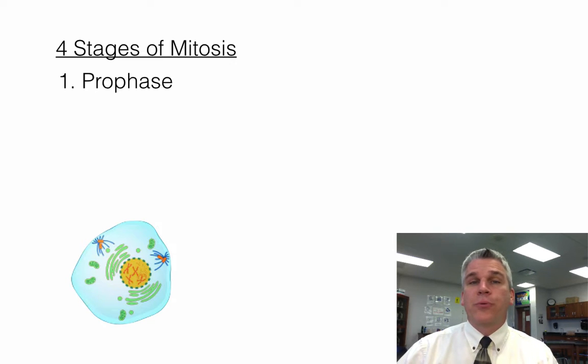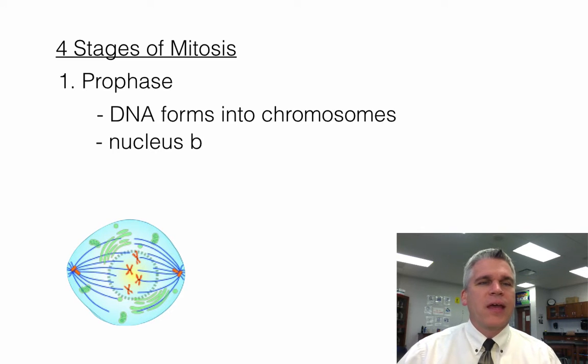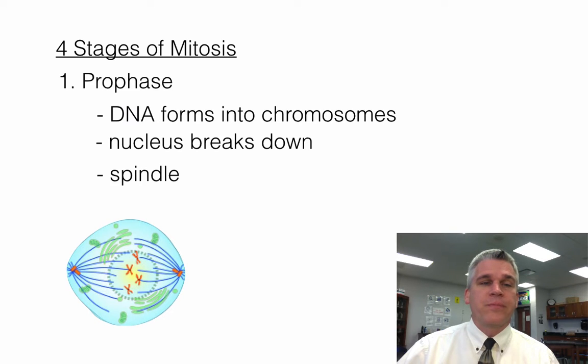The first stage is called prophase. During prophase, the DNA is going to form into a chromosome shape, and we'll talk about this some other time. The nucleus breaks down, so there's no nucleus during this process of cell division. And spindle fibers form.